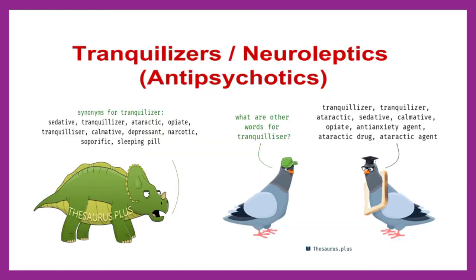As you can see in the image, synonyms of tranquilizers include sedative, ataractics, calmative, anti-anxiety, and depressants. There are types: minor tranquilizers and major tranquilizers, which we will also discuss.